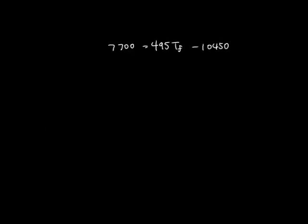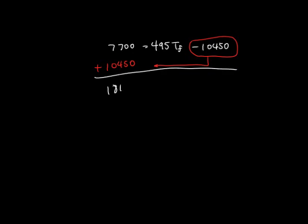Now, we take the negative 10,450 off the right and move it to the left. When we move it, it will change to addition rather than subtraction. If we add these numbers together, we will get 18,150 equals 495 Tf.